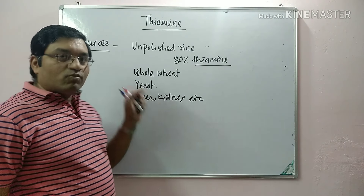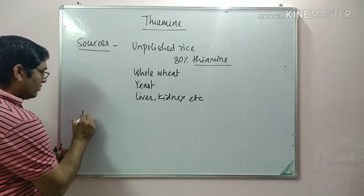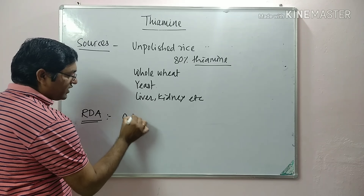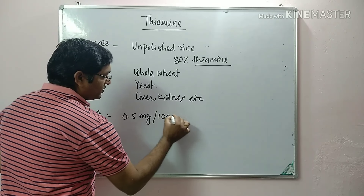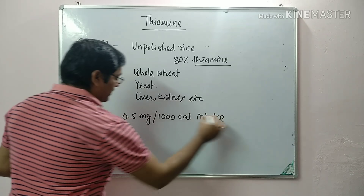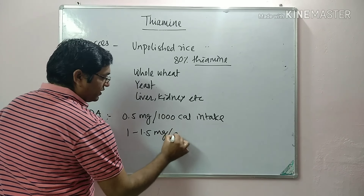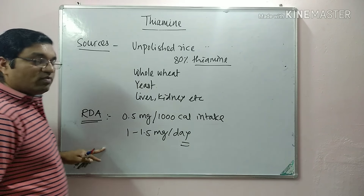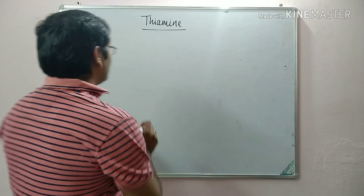Coming to the recommended dietary allowances, it is 0.5 milligrams per 1000 calorie intake, or approximately 1 to 1.5 milligrams per day. That is the daily requirement of thiamine.